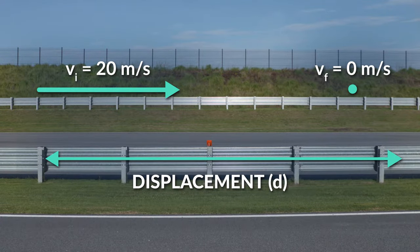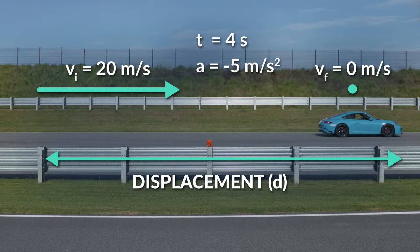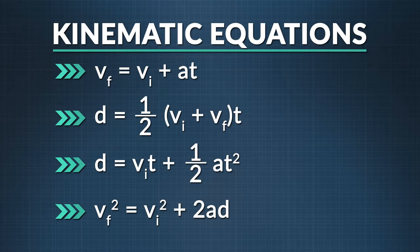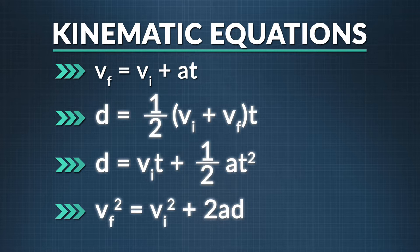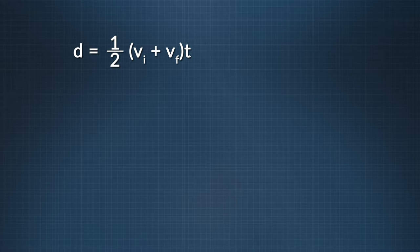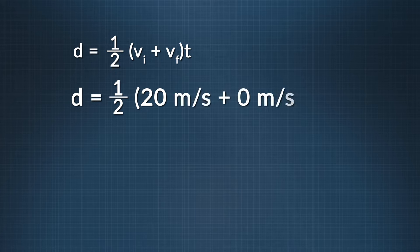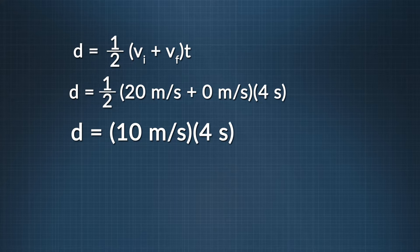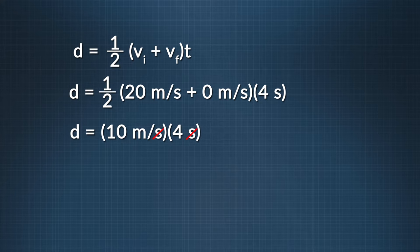Now let's do an example where we solve for displacement. The initial velocity is 20 meters per second, final velocity is 0 meters per second, time is 4 seconds, and our rate of deceleration is negative 5 meters per second squared. Using the equation: displacement equals one-half times the sum of initial and final velocities multiplied by time. Plugging in values: displacement equals one-half of 20 plus 0 meters per second times 4 seconds. 20 plus 0 times one-half gives us 10 meters per second times 4 seconds — our displacement is 40 meters.